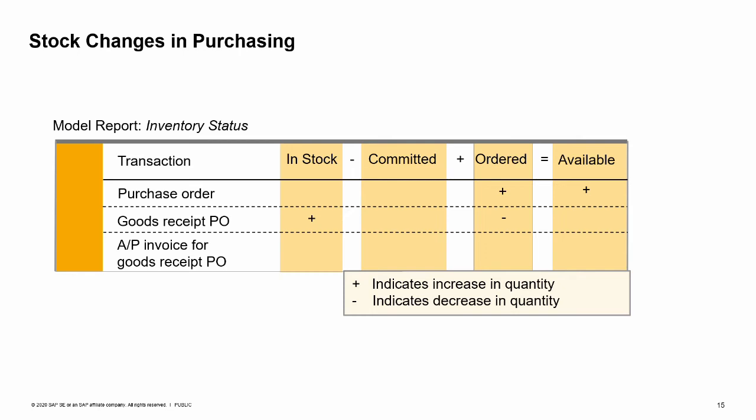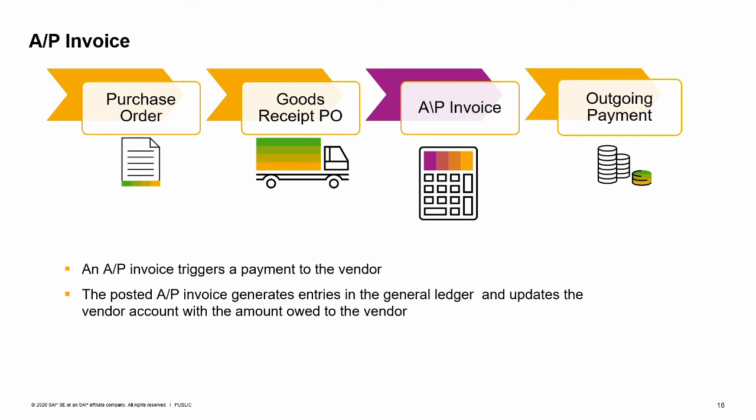As long as an AP invoice references a goods receipt PO, it will not affect stock levels. An AP invoice is entered into SAP Business One when you receive an invoice from the vendor. The document will be used to trigger a payment to the vendor. You can create an AP invoice by selecting the document name in the module menu or by basing it on one or more POs or goods receipt POs. If you are basing your AP invoice on existing purchasing documents, you may copy all the data or use the draw document wizard. Even if you copy all data from existing purchasing documents, you can still adjust quantities and prices as well as other information before you post the document.